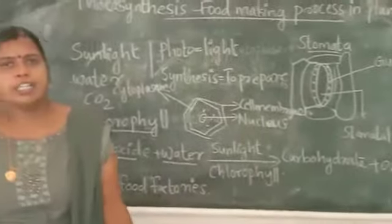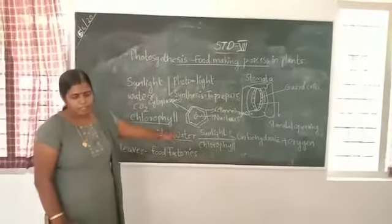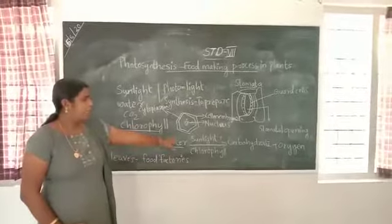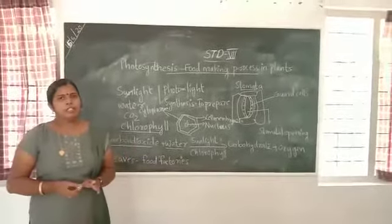Oxygen is released during photosynthesis. This oxygen is essential for all living organisms. In the absence of photosynthesis, life would be impossible.